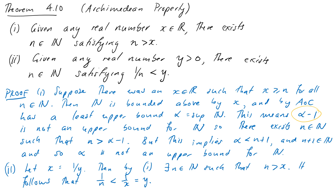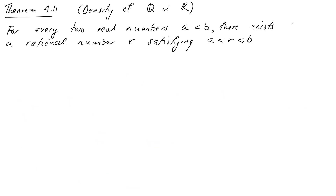This theorem gives us arbitrarily small rational numbers, or alternatively guarantees we can always find a natural number beyond any x. This is quite useful when constructing proofs — if we want to switch between using real numbers and natural numbers, this lets us justify those steps. We'll immediately use this to show the density of the rational numbers inside the real numbers.